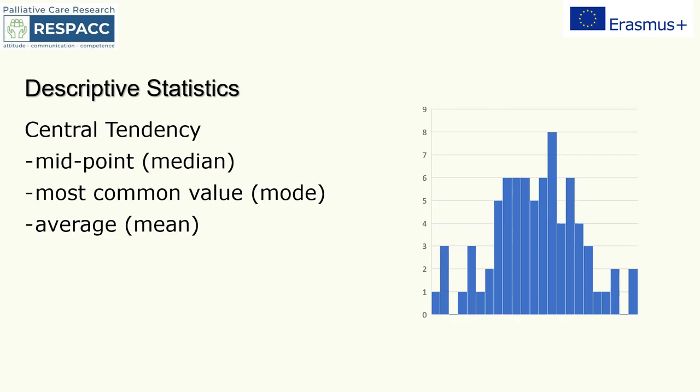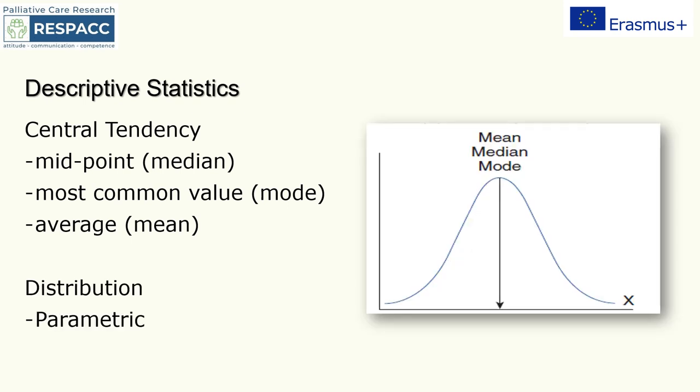Measures of central tendency estimate the centre or average of a data set, and these include the mean, median and mode. There are three ways of telling us about the properties within the data. Central tendencies are another way of saying where most of the data values lie. Here we can see that our data distribution is normal in that it forms a nice symmetric bell curve where the majority of data clusters around the mean and less data points at the extreme ends. We would call this type of distribution parametric.